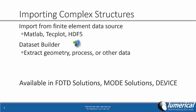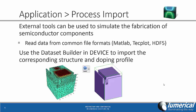This capability is available in FDTD, MODE, and Device. For example, let's consider importing process data into Device. In some cases, external tools can be used to simulate the fabrication of semiconductor components. This data can be read from these tools using common file formats such as MATLAB, TECHPLOT, and HDF5. Then the new dataset builder, in this case in Device, will be used to import the corresponding geometry and doping profile from that finite element data source. We can see the raw data on a finite element mesh — this is the doping profile — and with the use of the dataset builder, we can easily extract the corresponding geometry information out of that dataset.